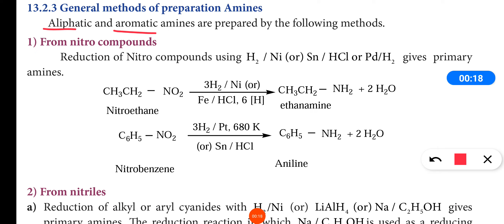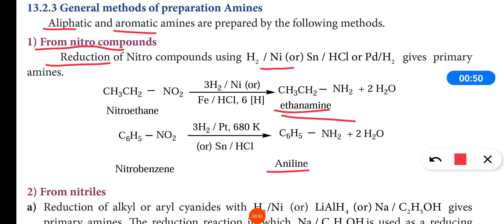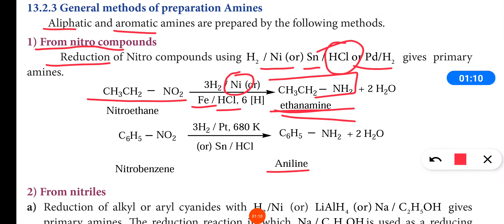The first method of preparation is the reduction of organic nitro compounds. Organic nitro compounds include nitroalkanes and nitroarenes. For reduction, we can use nickel, tin in acid medium (HCl), or palladium. If you take nitroethane and carry out reduction by nickel or iron in acid medium, it will form ethanamine. If you take nitrobenzene, it will form aniline.